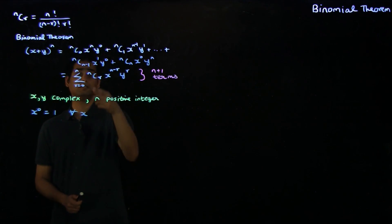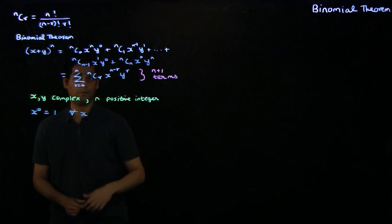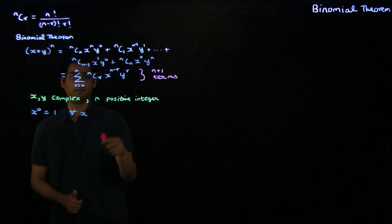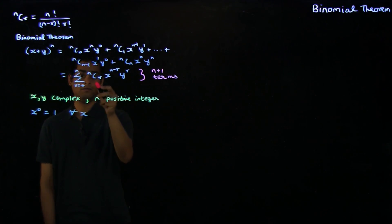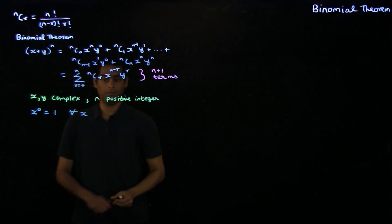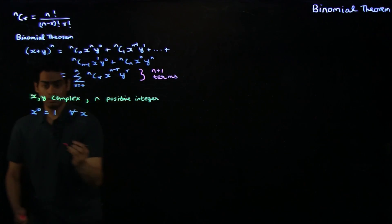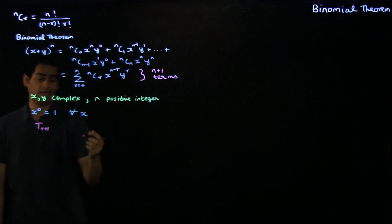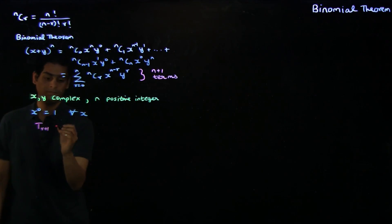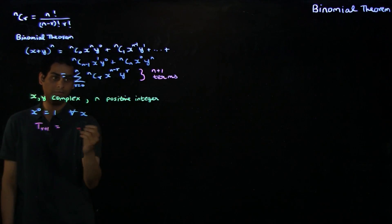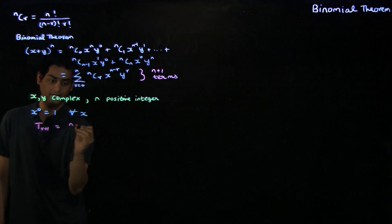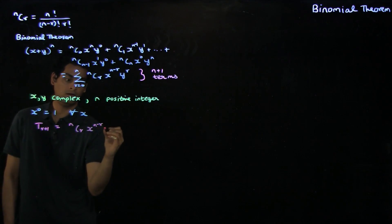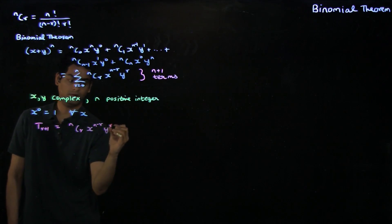You notice that there is a pattern to the terms in the binomial theorem, and that is well captured by the general term. In general, the r plus 1 term in the expansion of x plus y to the n can be written as nCr times x to the n minus r times y to the r.